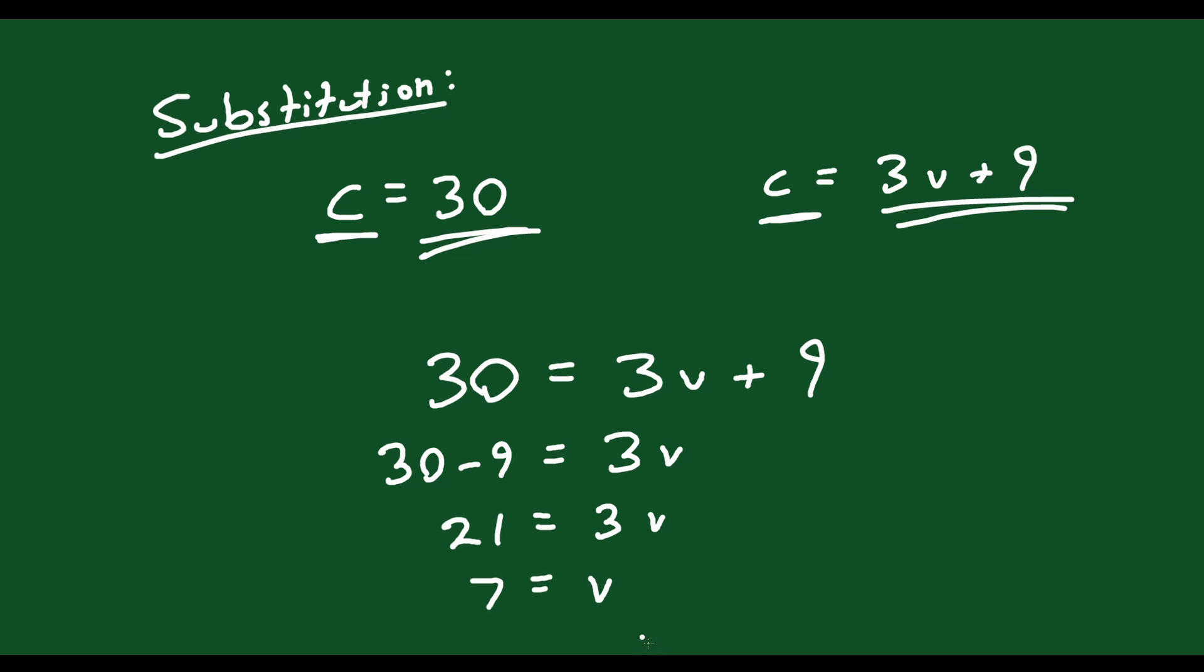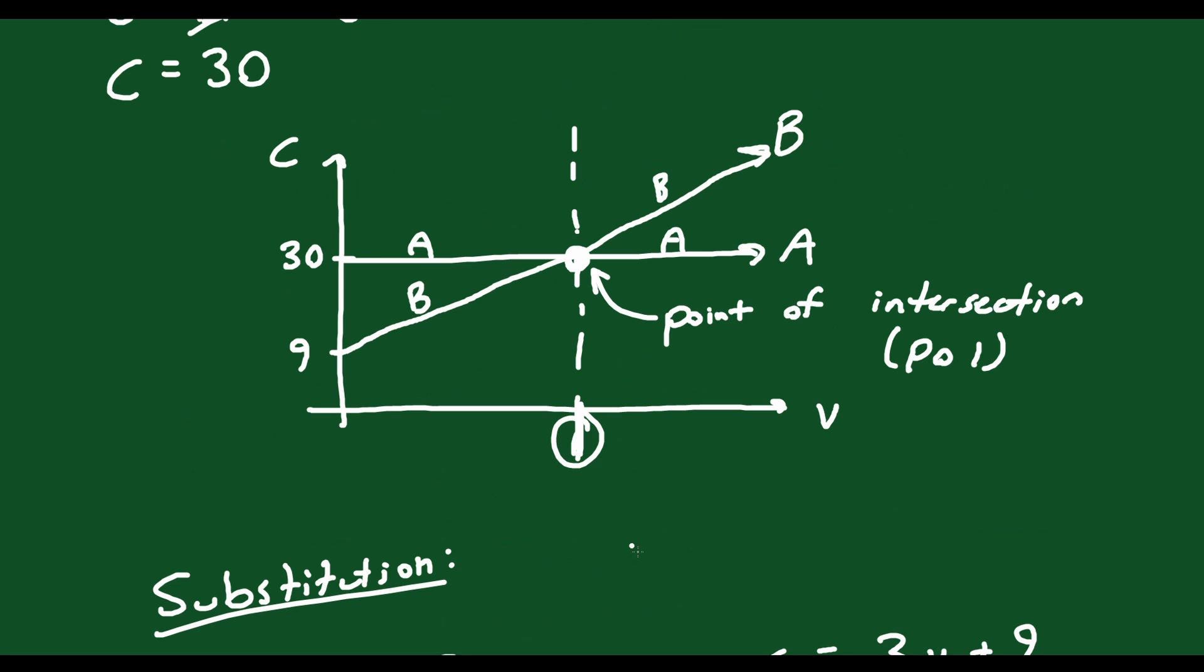7 equals V. So 7 is the amount of videos that you would have to rent in order for plan B to become more expensive. So up here on our graph, this value here is 7.